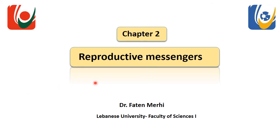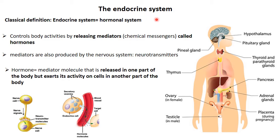Good morning. Today we are going to see Chapter 2, in which we will talk about the reproductive messengers — hormones. As you know, hormones are very important when we talk about reproduction. When we talk about reproduction, we necessarily talk about hormones because they regulate the reproductive system in a very important way.